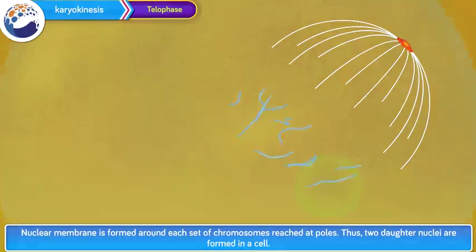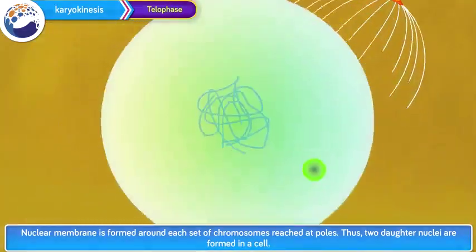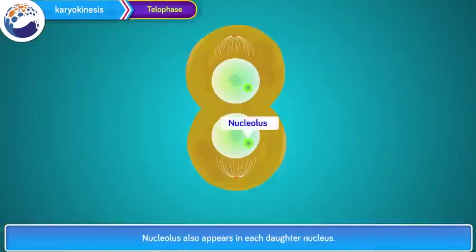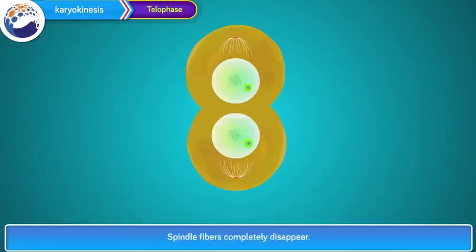In telophase, the chromosomes which have reached the opposite poles of the cell start to decondense, due to which they again become thread-like, thin and invisible. A nuclear membrane is formed around each set of chromosomes at the poles. Thus, two daughter nuclei are formed in the cell. Nucleolus also appears in each daughter nucleus. Spindle fibers completely disappear. In this way, karyokinesis completes and cytokinesis begins.